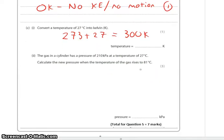And finally part 3. That's C part 2, so worth 3 marks. The gas in the cylinder has a pressure of 210 kilopascals at a temperature of 27 degrees Celsius. Calculate the new pressure when the temperature of the gas has risen to 81 degrees. Now hopefully you realized you were going to be using pressure law.